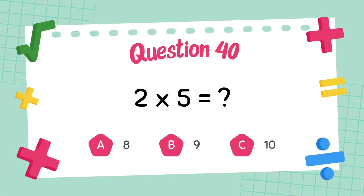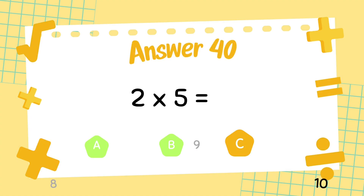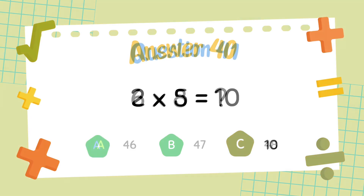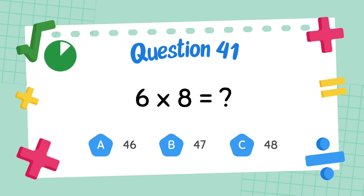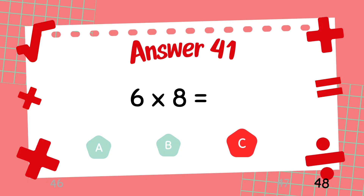What is 5 multiply 8? What is 8 multiply 8? The answer is 48. What is 5 multiply 5? The answer is 48.